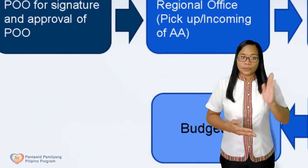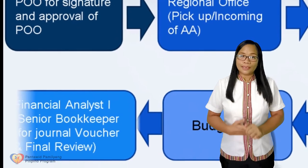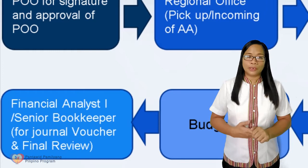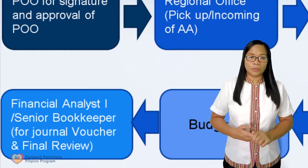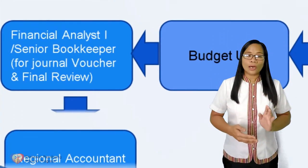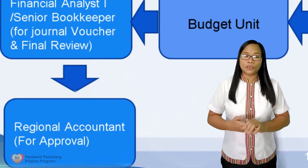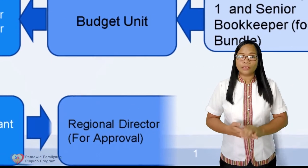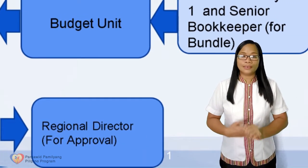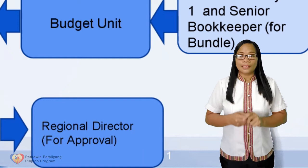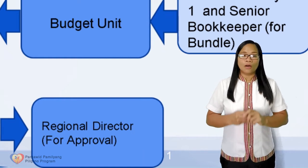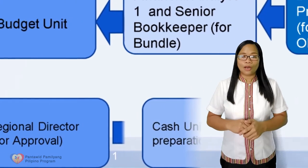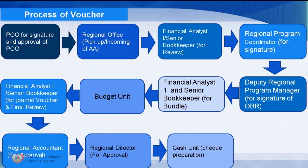And return to Financial Analyst or Senior Bookkeeper for journal entry voucher and final review. And out to Accounting Unit for signature of Regional Accountant, to Regional Director for approval of vouchers and other attachments that need the approval of the Regional Director. And last, to Cash Unit for check preparation.